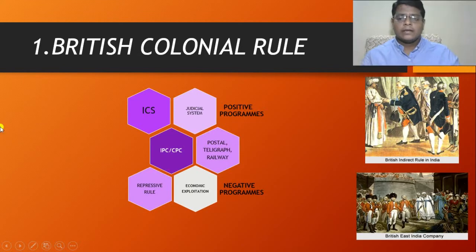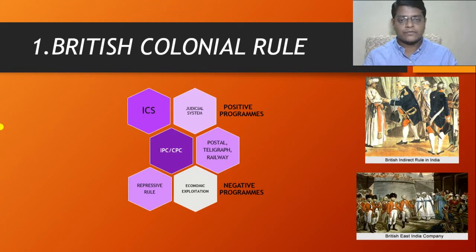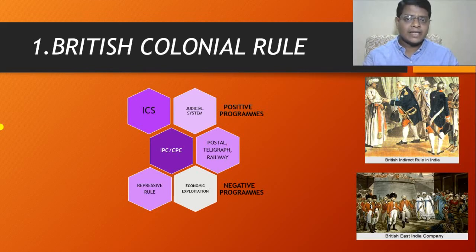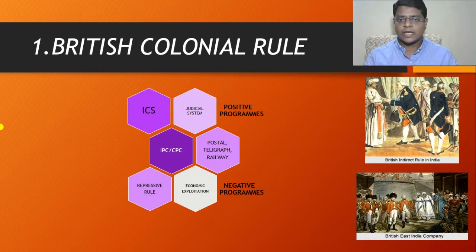The first cause is British colonial rule. Britishers came to India for the purpose of trade, and continued up to India's attainment of independence — that means the British colonial rule continued around 200 years in India. During this entire period, the British colonial rule had two impacts on Indian society: one is positive impact, and another one is negative impact.